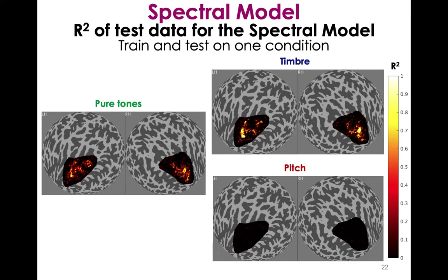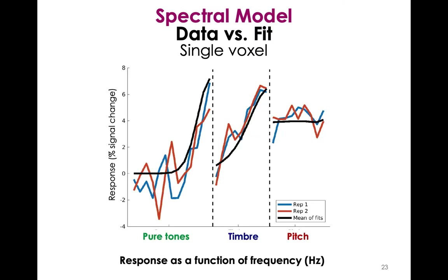The R-squared maps of the test data show pure tones and timbre still looking pretty good with hot spots in similar locations, but the model is explaining basically no variance for the pitch condition — which isn't surprising since we're no longer using fundamental frequency as input. This suggests using spectral content as model input works well for pure tones and timbre but is not a good model for pitch variations. At the single voxel level, the model fits pure tones and timbre well but shows essentially a flat line for pitch, suggesting that even if there is some tuning for pitch, this model is not picking up on it.